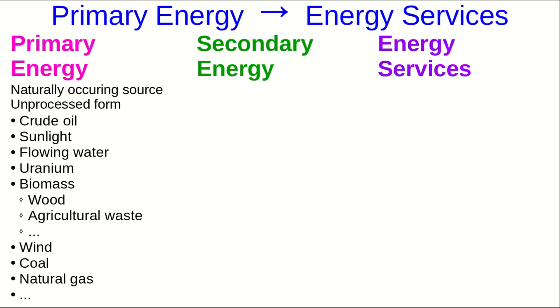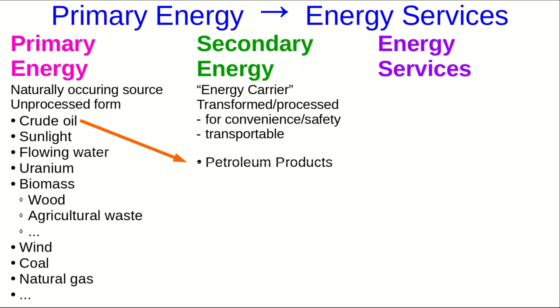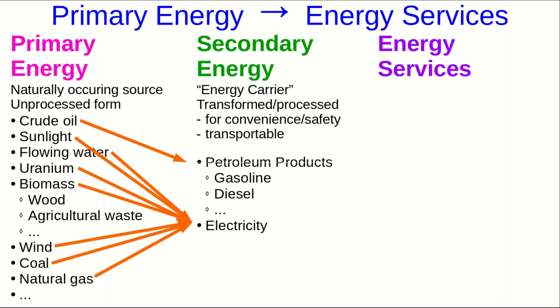Often, however, these are inconvenient to work with. And so some primary energy sources tend to get produced into secondary energy, or what are called energy carriers. These are transformed or processed products, usually, which are more convenient, safe, or transportable than primary energy forms. So we turn crude oil into petroleum products such as gasoline and diesel. We take most of these primary energy sources and convert them into electricity. And sometimes petroleum products also get converted to electricity, so we can convert secondary sources into other secondary sources. Hydrogen and so on.